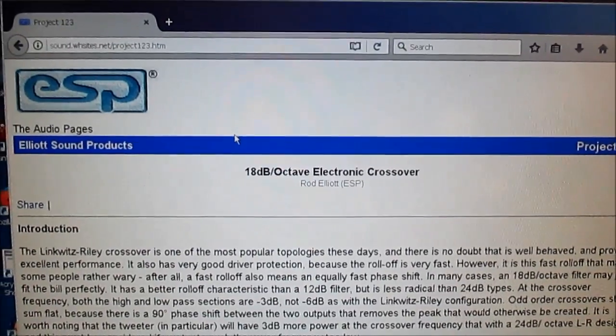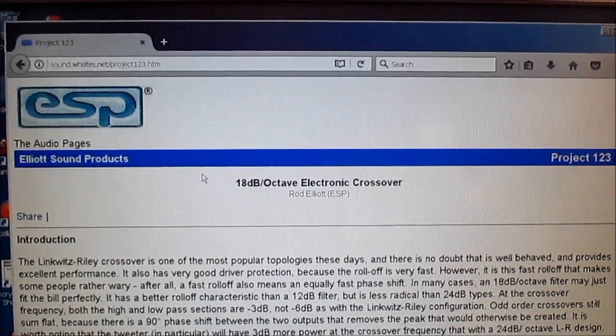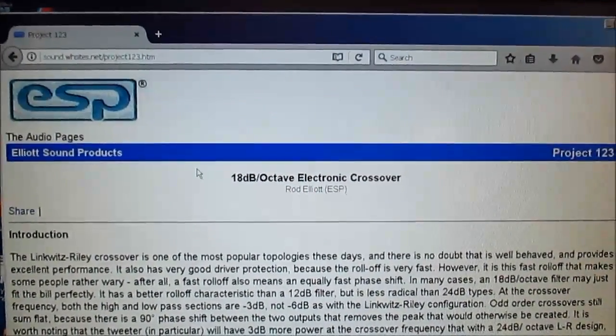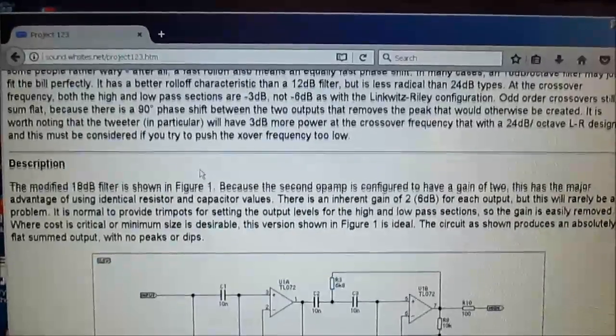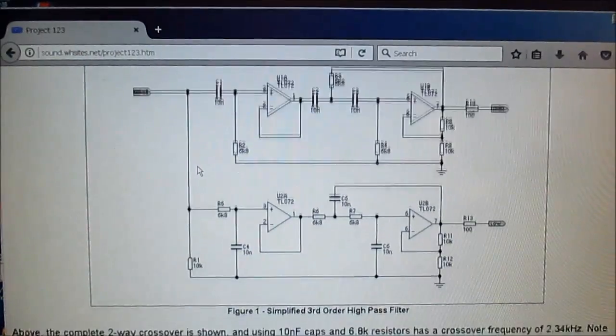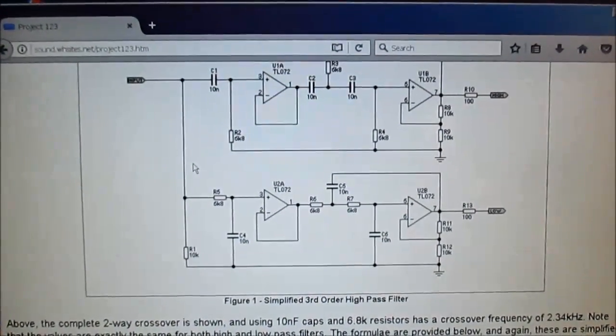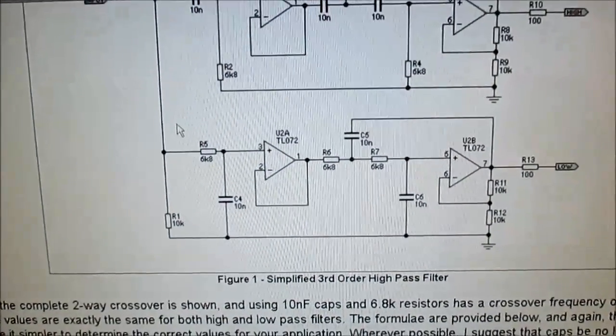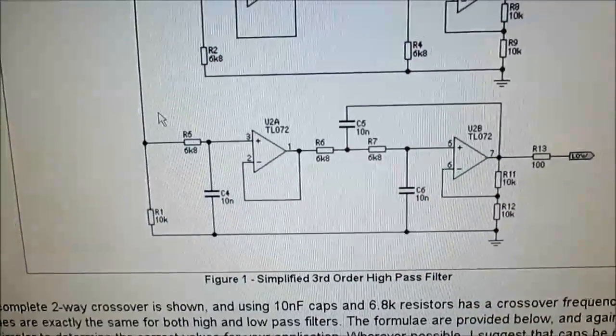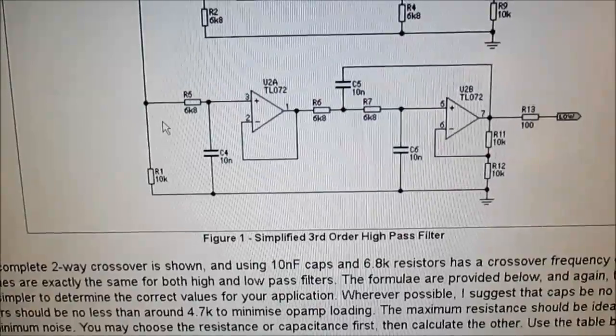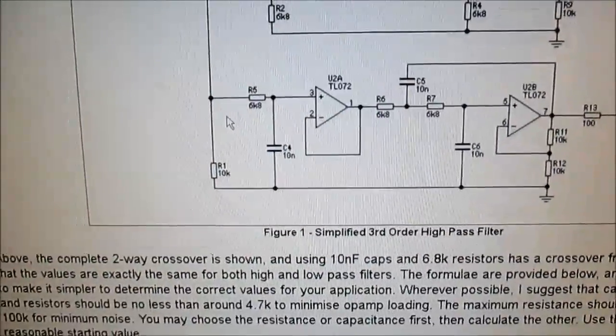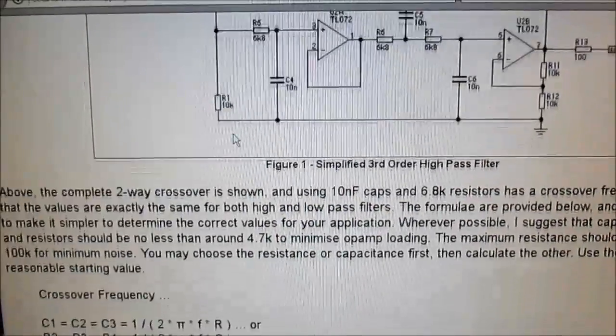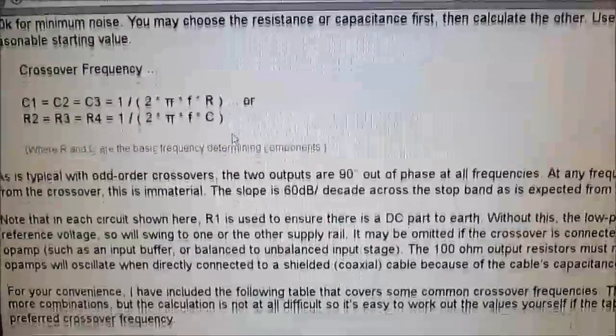Rod Elliott's Elliott Sound Products website. Great respect for the guy to put all this information up on the web for people. Well, he has an electronic crossover. I'm going to use the low pass part of it for my subwoofer amplifier. And here, this bottom part is the low pass section we're going to use. Not these values though. And I will also put a link to this page in the description. I would recommend reading it. It has lots of good information.